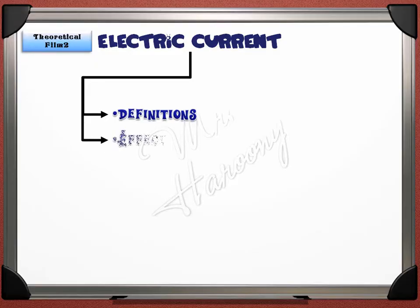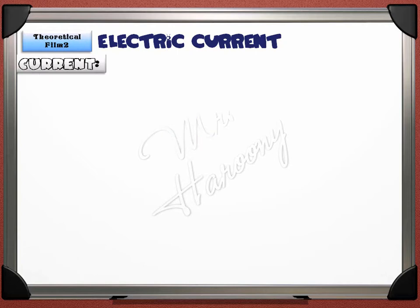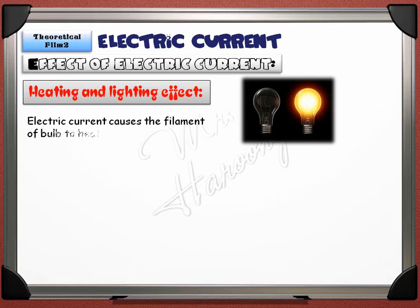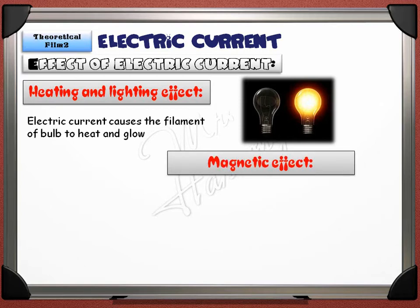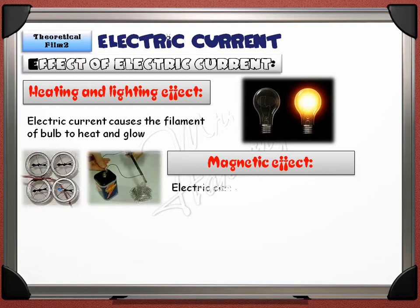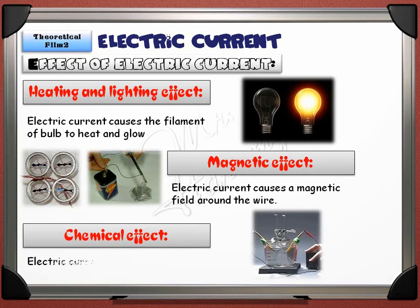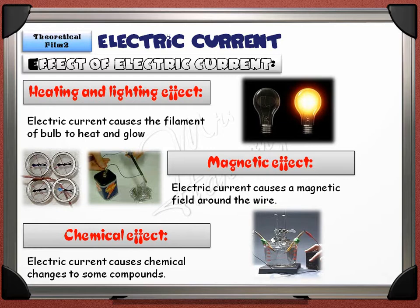Electric current can cause a heating and lighting effect — electric current causes the filament of a bulb to heat up and glow. Electric current also causes a magnetic effect, creating a magnetic field around the wire and can make an electromagnet. The electric current also has a chemical effect: it causes chemical changes to some compounds in a reaction called electrolysis of ionic compounds.